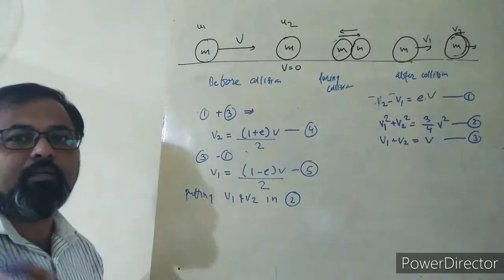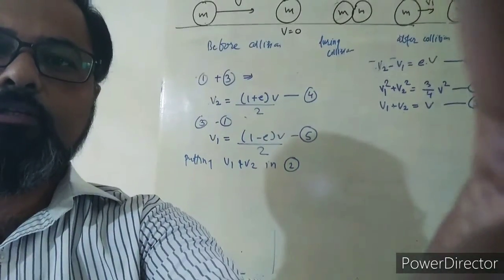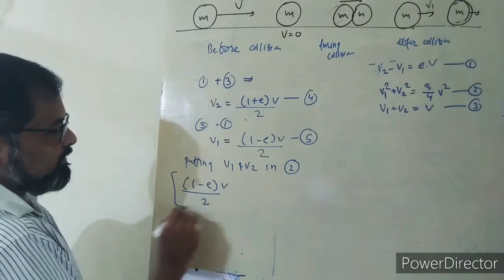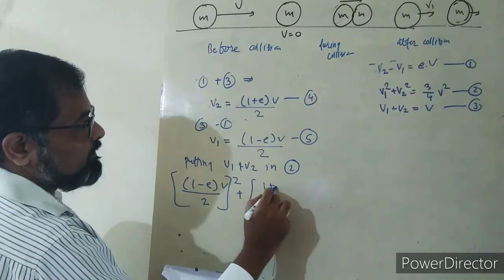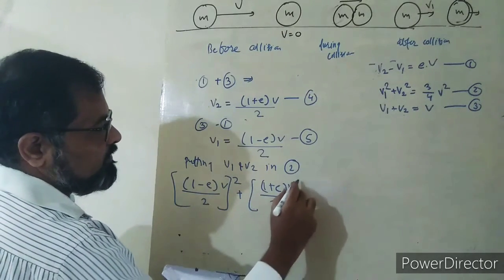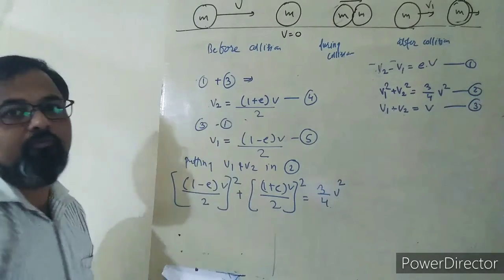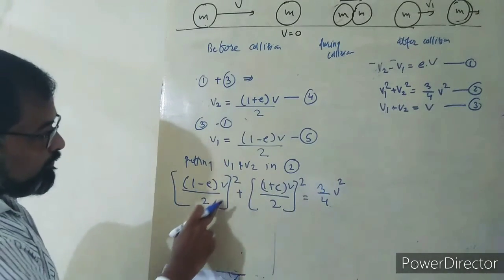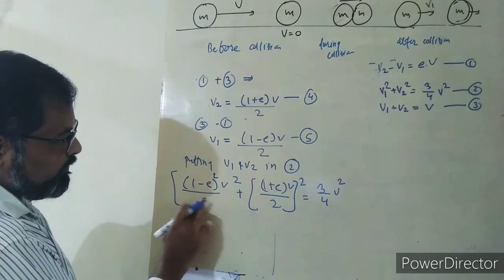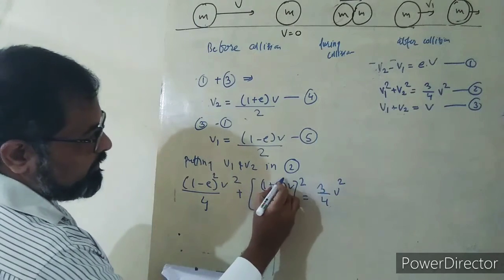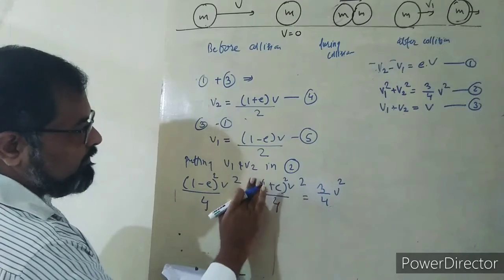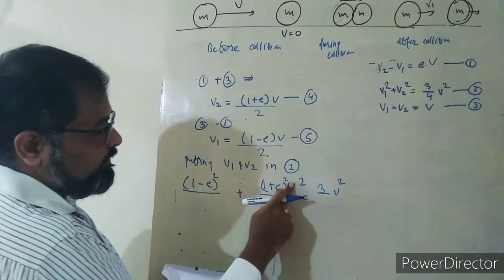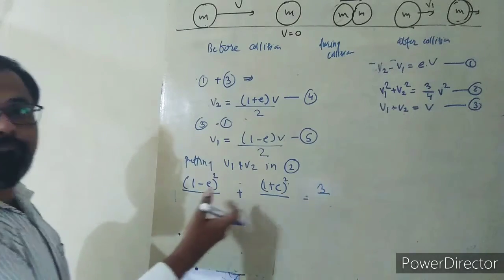Substituting into equation 2, we get one-half m times v1 squared plus one-half m times v2 squared equals three-fourths m v squared. Taking v squared common and simplifying, we have v1 squared plus v2 squared on one side.